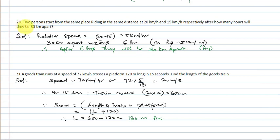Coming to question number 20: Two persons start from the same place riding in the same direction at 20 km per hour and 15 km per hour respectively. After how many hours will they be 30 km apart?